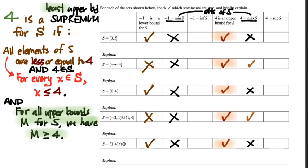Of these five sets, which ones have 4 as the supremum, the least upper bound? Number 2, for sure — 4 is an upper bound, and any other upper bound for this set has to be bigger than 4. How about number 3? I think so, right? If I try to make an upper bound for this third set that's any smaller than 4, what happens? How do I know there's not a smaller upper bound besides 4 for this set?